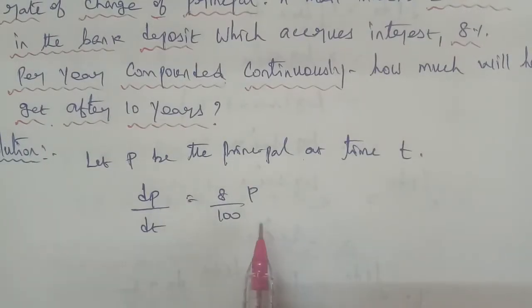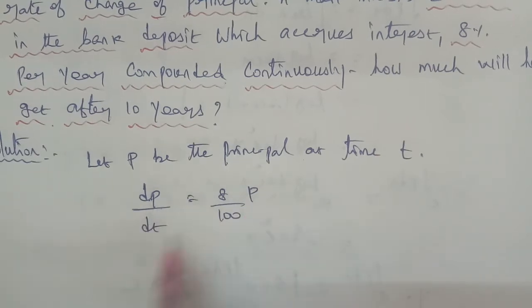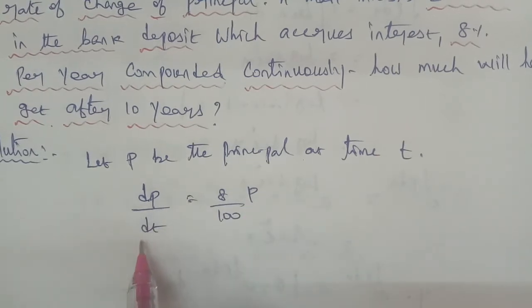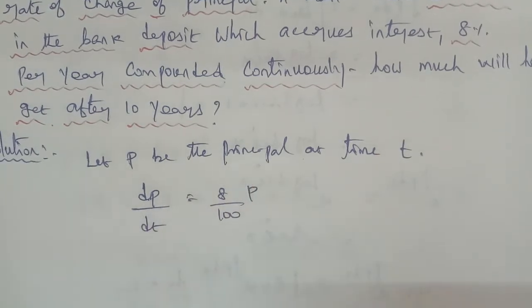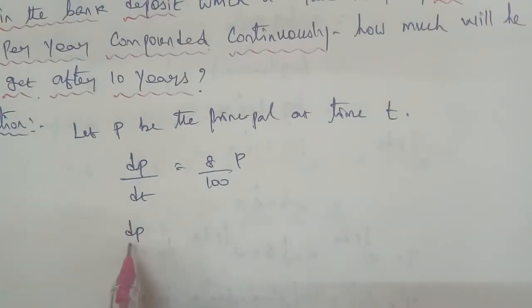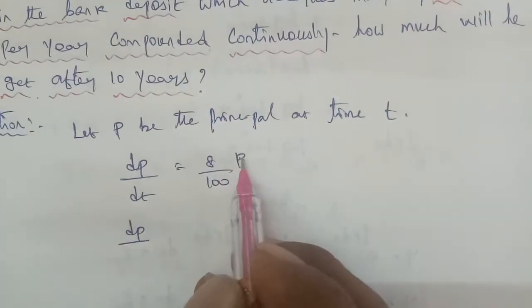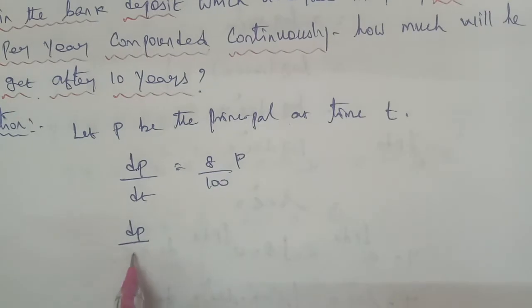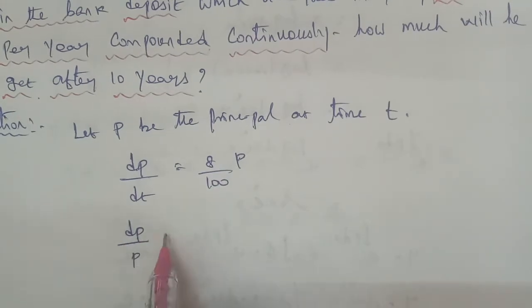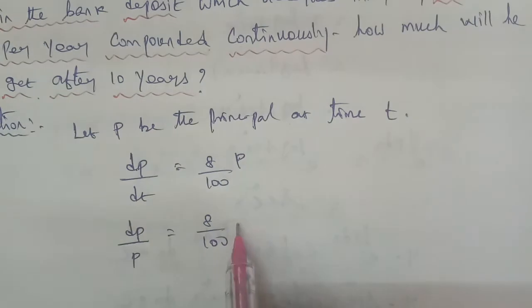This is a variable separable method. Separating the variables, keeping the P terms on one side: dP/P = 8/100 dt, that is dP/P = 0.08 dt.